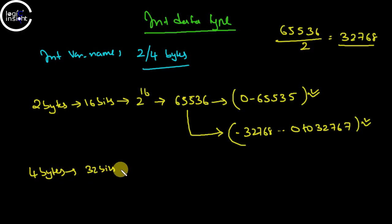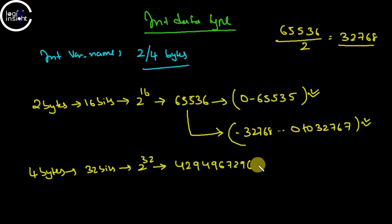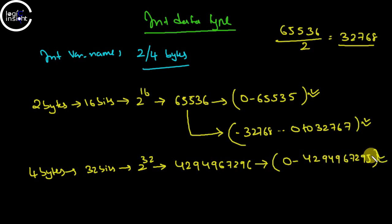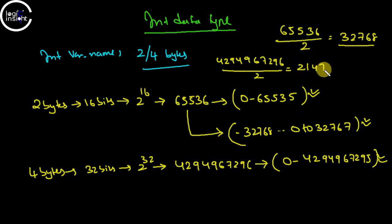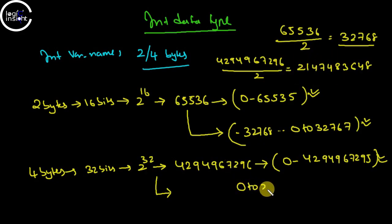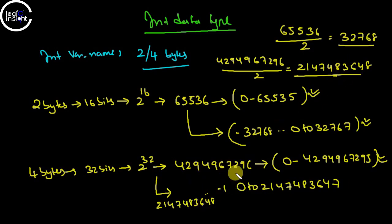If 4 bytes are allocated, that means 32 bits. 2 power 32 gives the total capability the variable can store. In the unsigned range it will be 0 to 4,294,967,295. For the signed system we divide by 2, giving 2,147,483,648. So the signed range would be 0 to 2,147,483,647 in positive, and from -1 to -2,147,483,648 in negative.